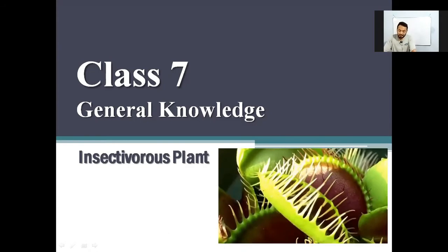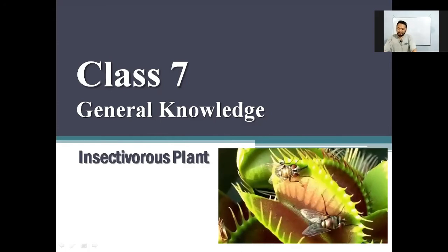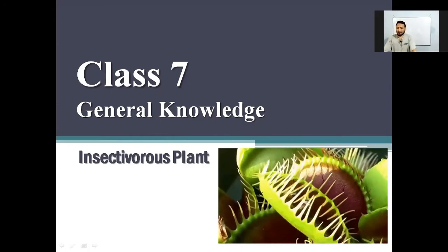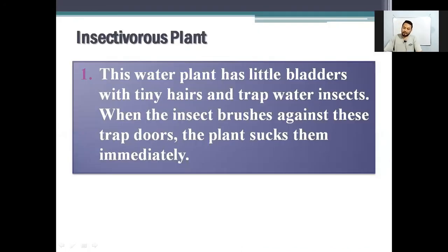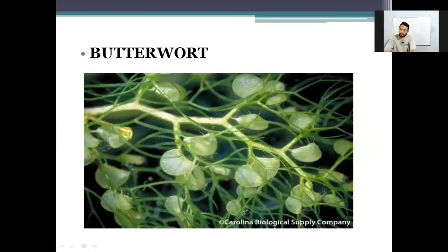Now let us read the descriptions and name the following plants. Number one: this water plant has little bladders with tiny hairs and traps water insects. When the insect brushes against these trap doors, the plant sucks them in immediately. And the name of this plant is bladderwort.